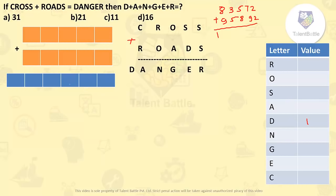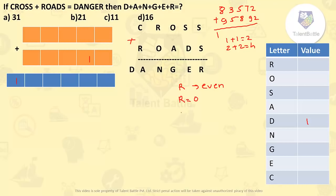On the right side I've written all the letters and I'll write their values one by one. Value of D is 1, and I'll fill it in the boxes. Now starting from the rightmost column: S plus S equals R. One concept from arithmetic — whenever you add two similar digits, the answer is always even. So R must be an even number. R can be 0, 2, 4, 6, or 8.